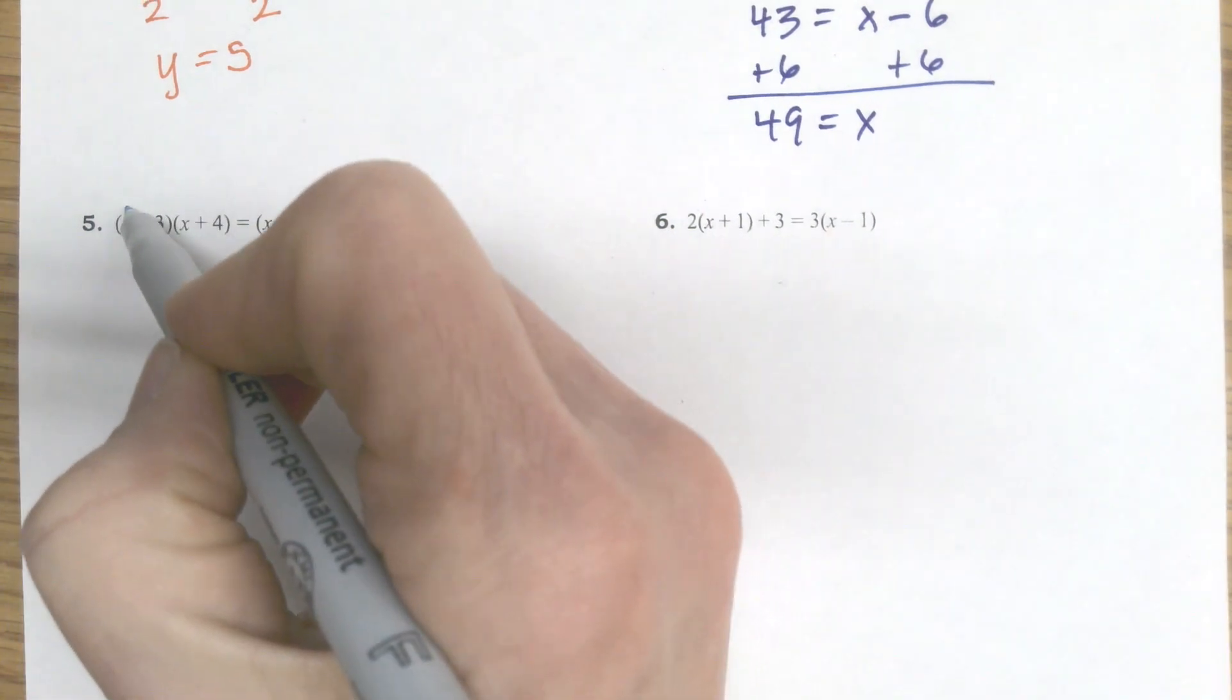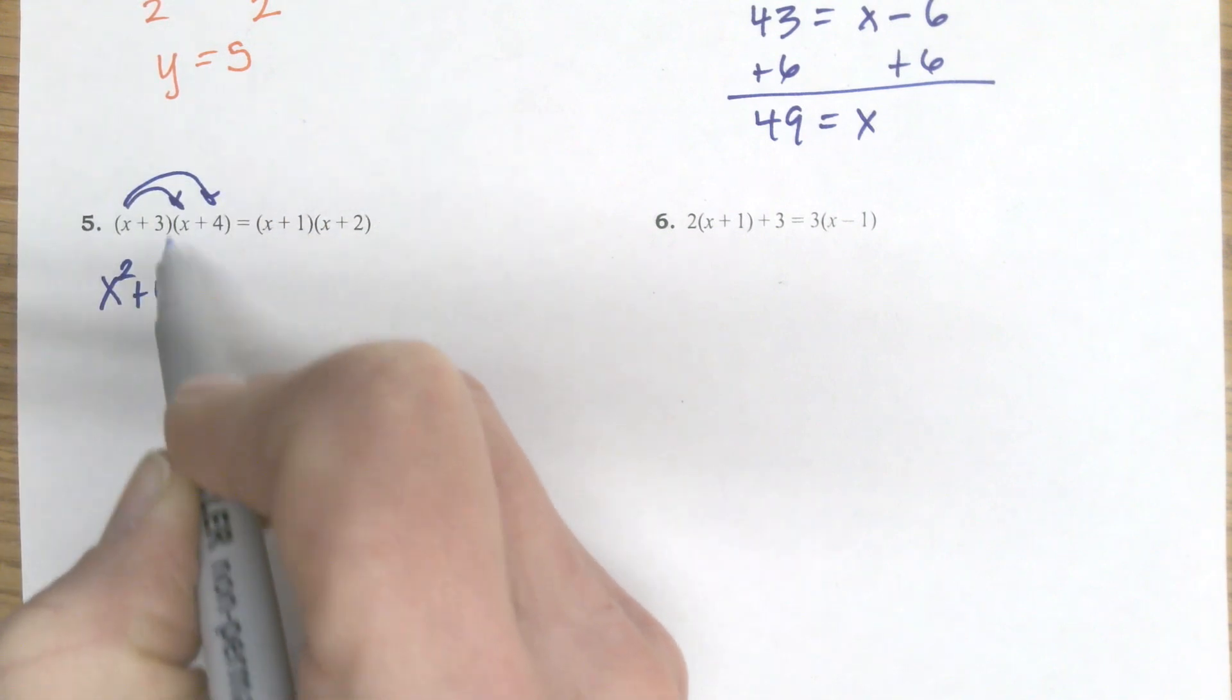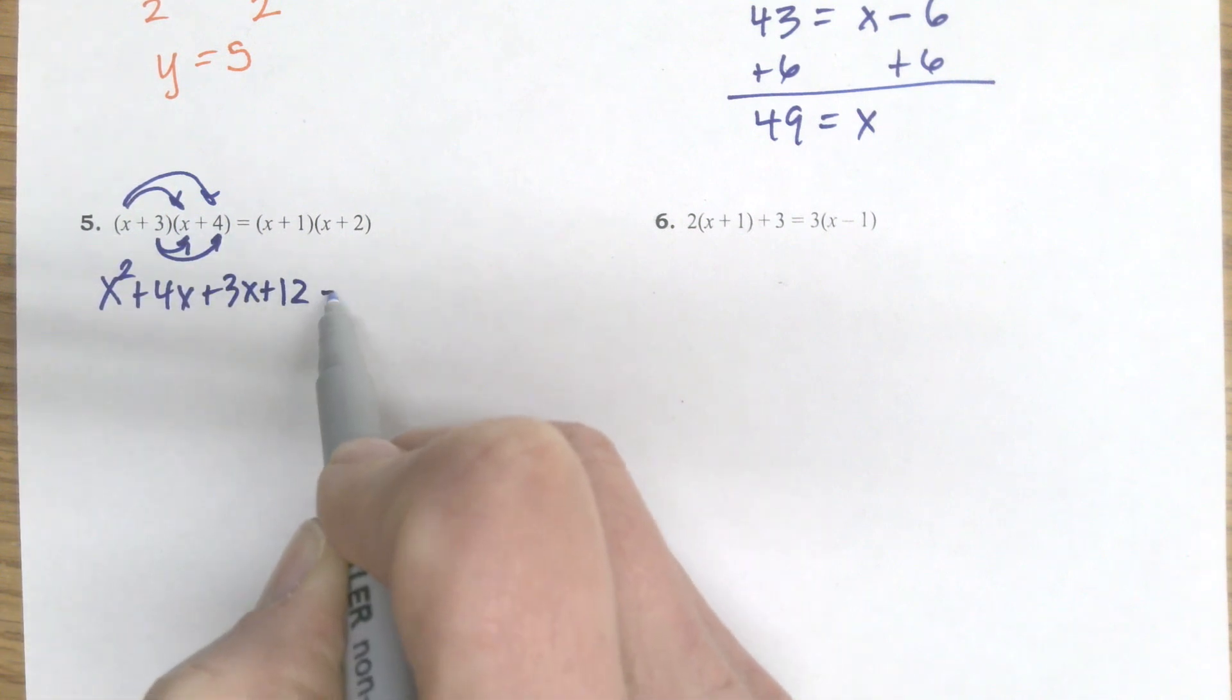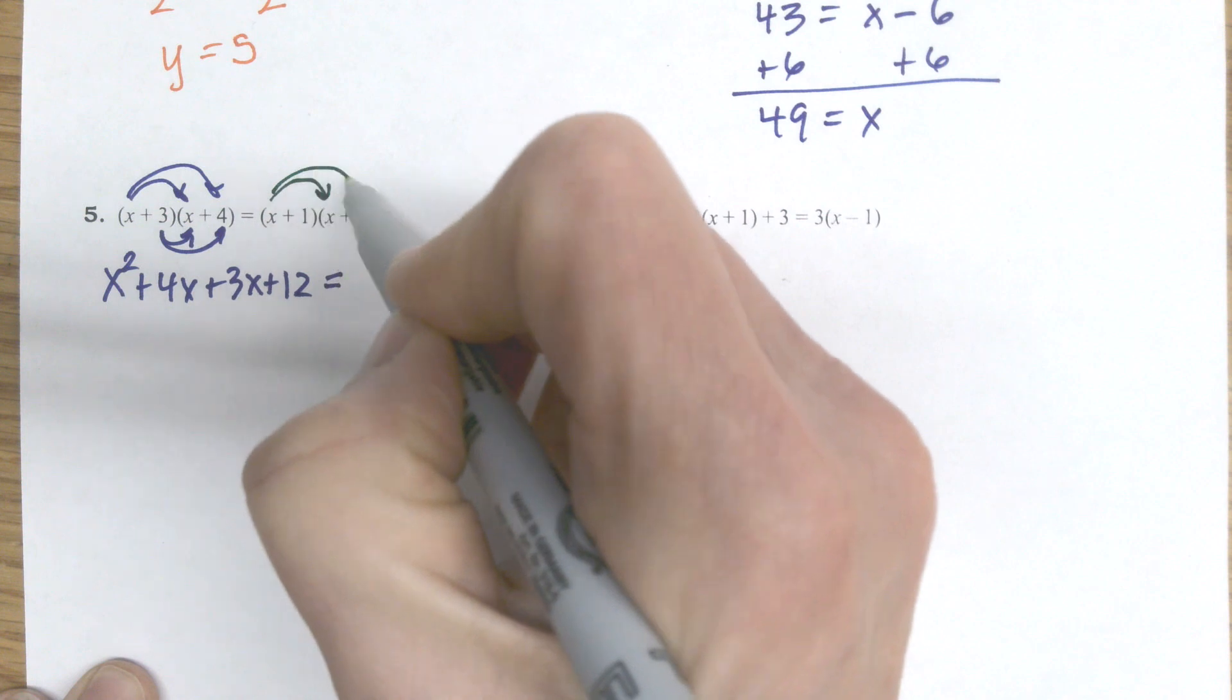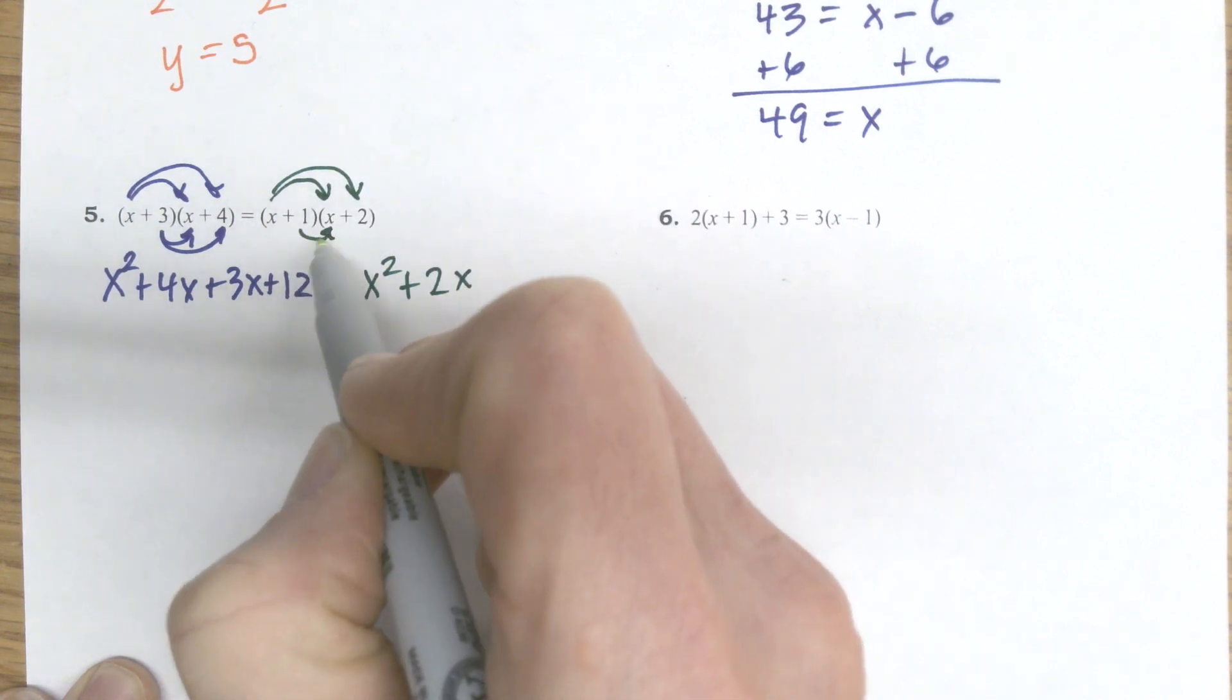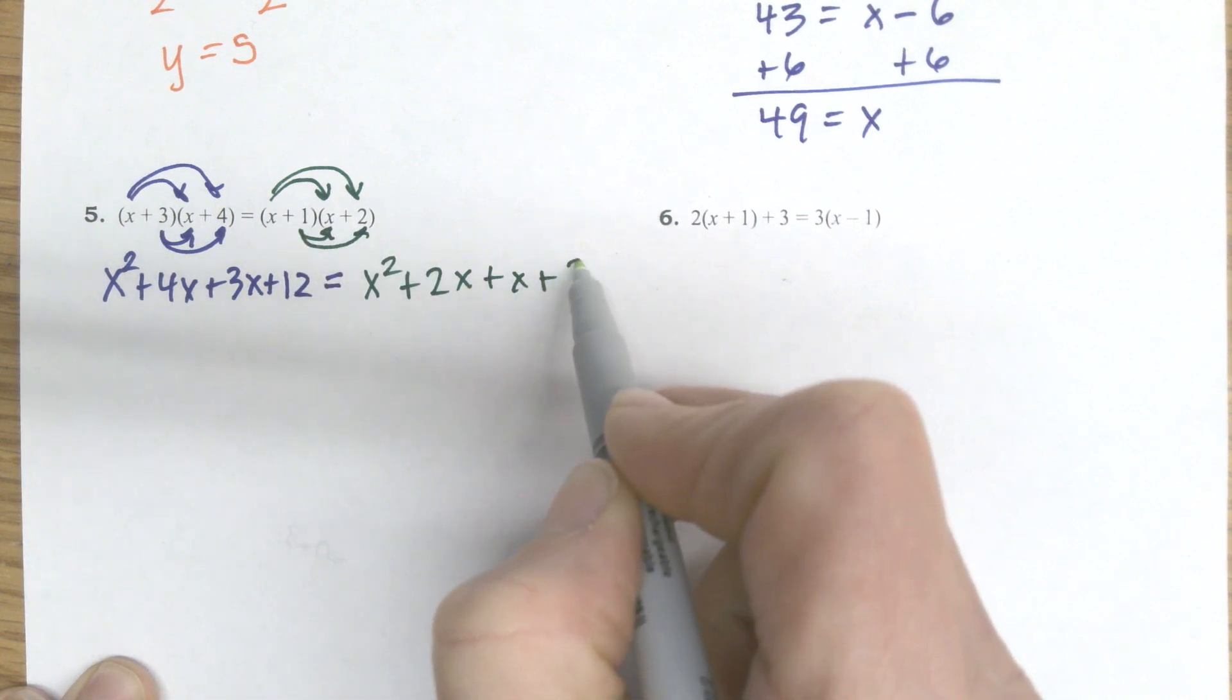But I'll go ahead and distribute x times x and x times 4. That's x squared plus 4x. And then I do 3 times x and 3 times 4. So plus 3x plus 12 equals, I'm going to do the same thing on the other side. x times x, x times 2. So that's x squared plus 2x. And then 1 times x and 1 times 2. That's plus x plus 2.